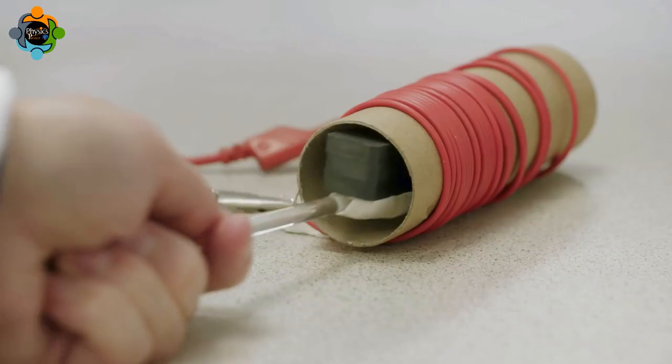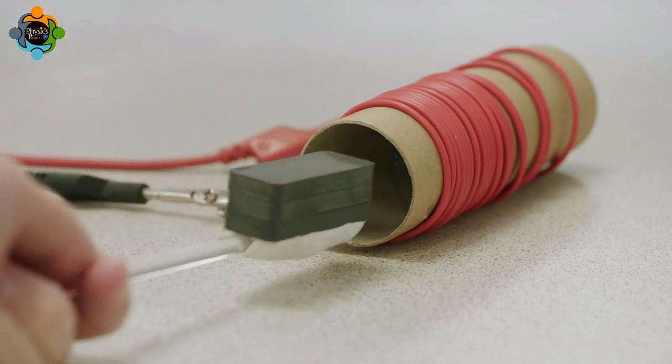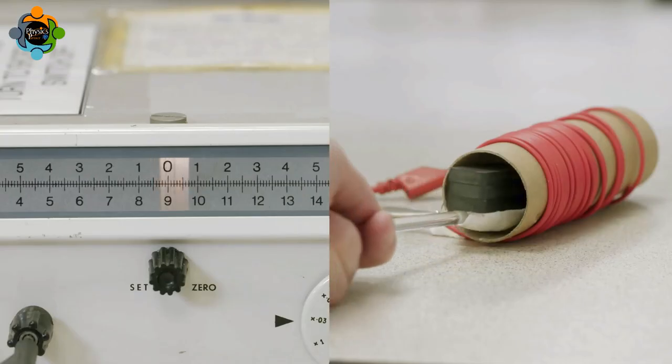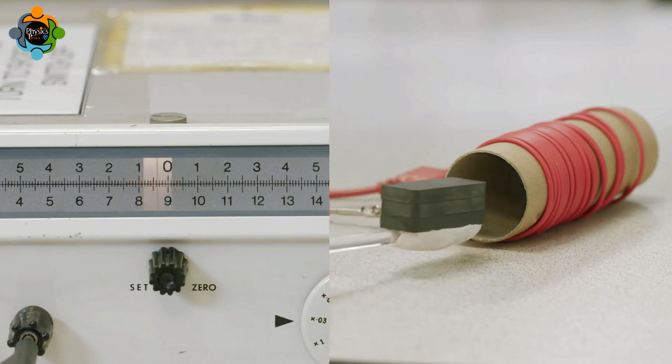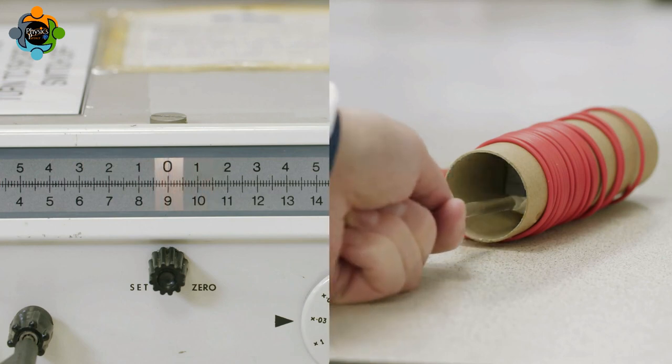No EMF is induced when the magnet is stationary within the coil. As the magnet is moved towards and away from the coil, the induced EMF alternates between positive and negative values.